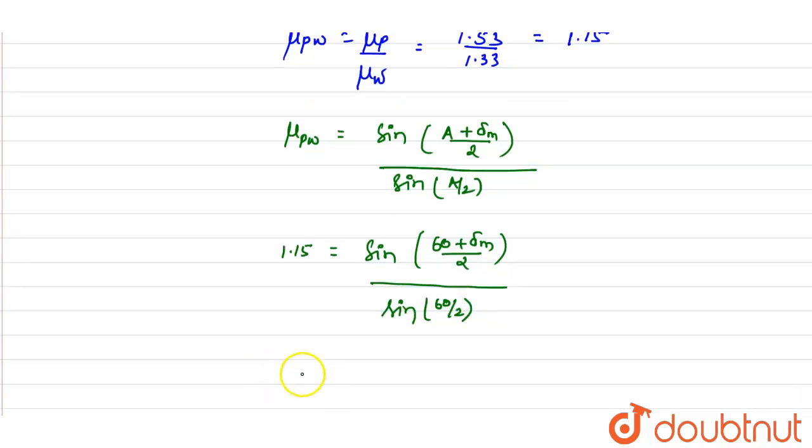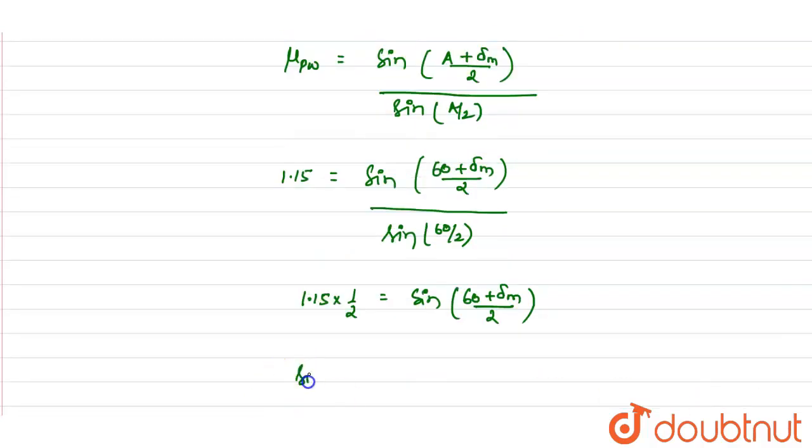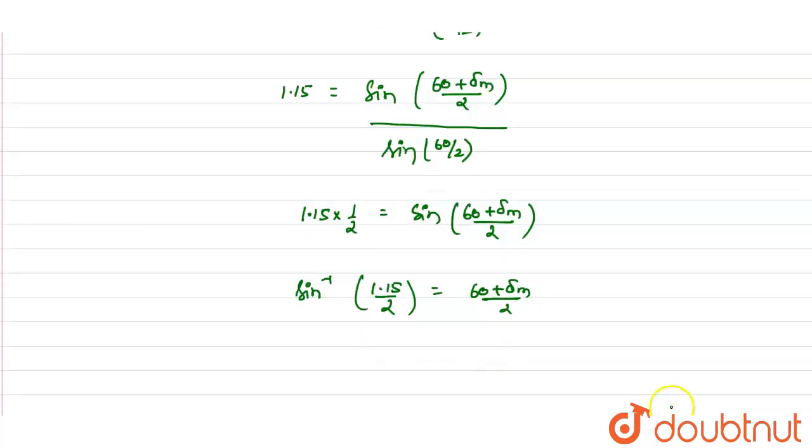This will be equals to 1.15 multiplied by sine 60 upon 2, that is sine 30, and sine 30 is nothing but half, so it equals sine of 60 plus minimum deviation delta m upon 2. From here we get sine inverse of 1.15 by 2 equals 60 plus delta m upon 2.